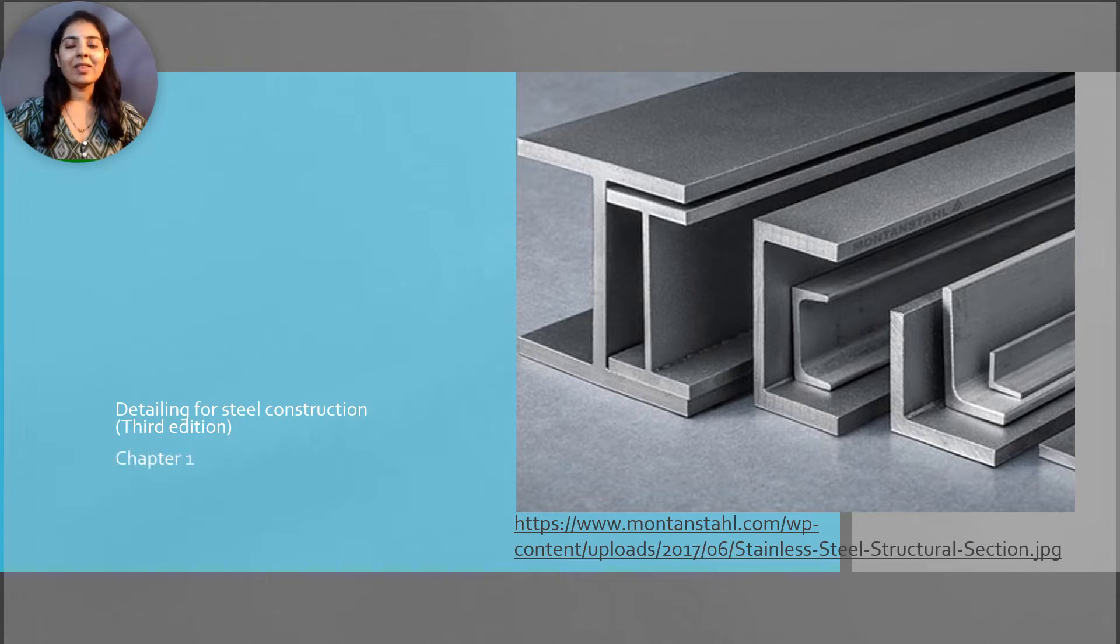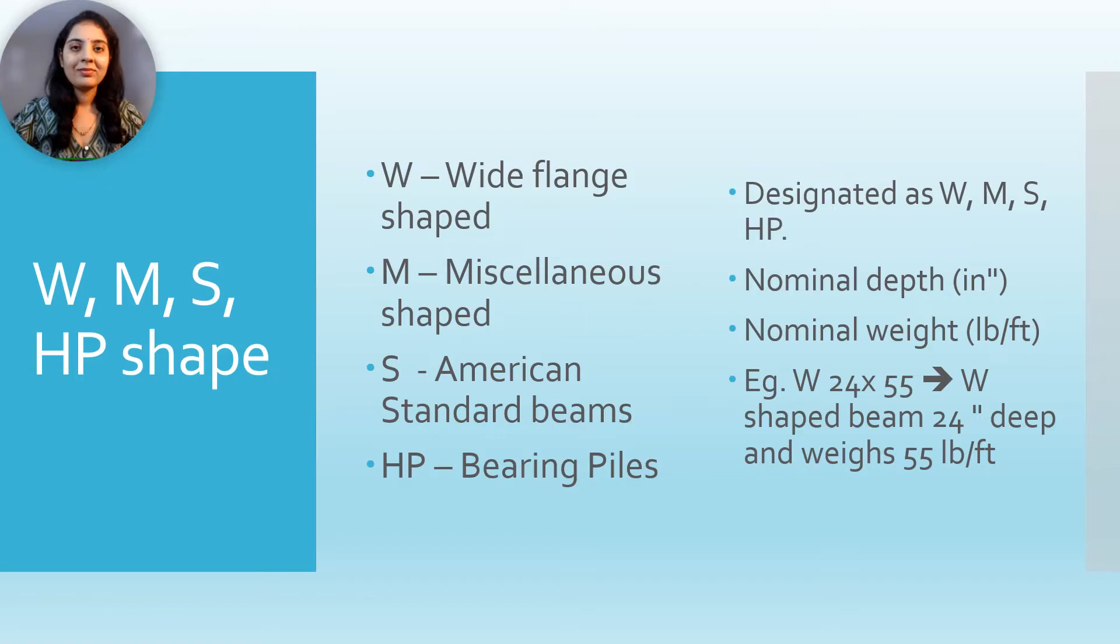We will see various structural steel shapes according to AISC. W, M, S, and HP shape. W shape is wide flange shape, M is miscellaneous shape, S is American standard beams, HP is bearing piles. Its nominal depth is in inches and nominal weight in pounds per feet.